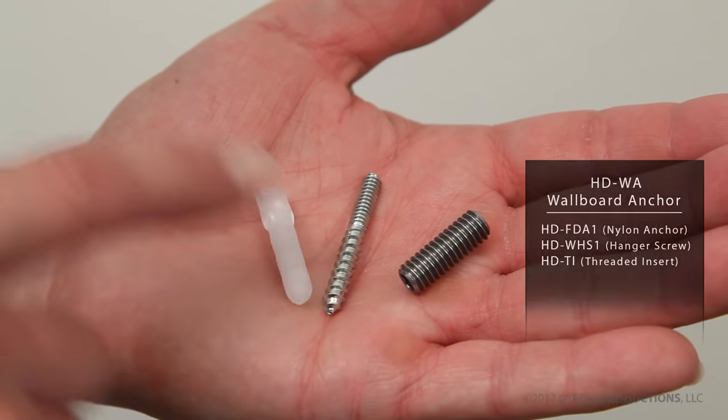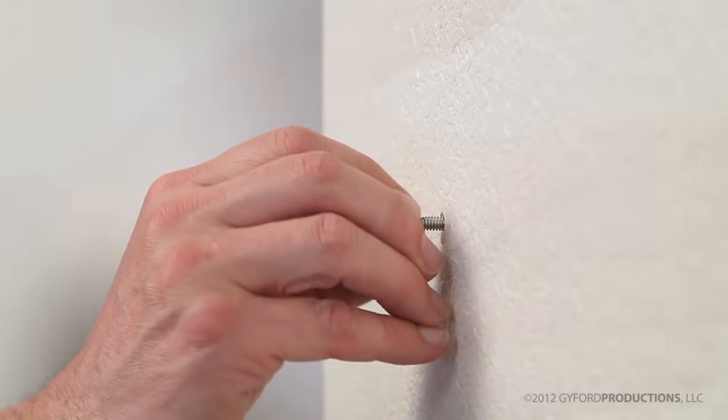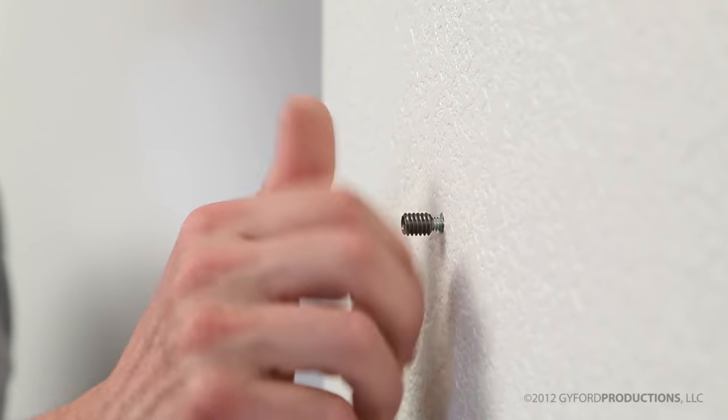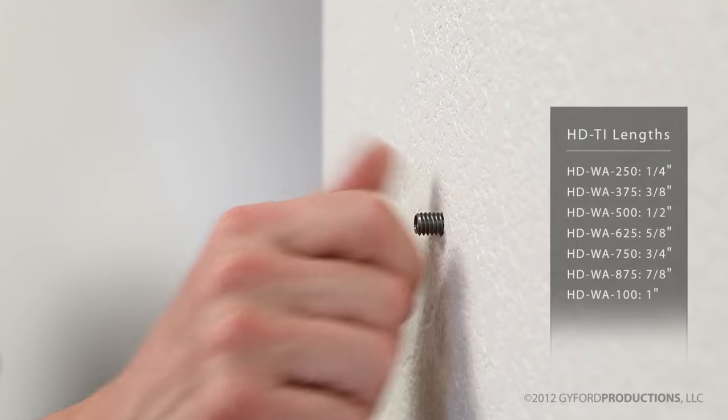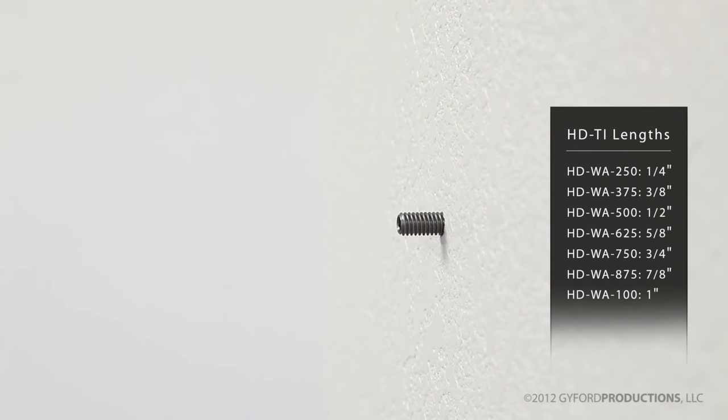This allows for a specific length of 5/16ths-18 thread protruding from the wall surface. Threaded inserts are available in seven different sizes ranging from 1/4 inch to 1 inch in length.